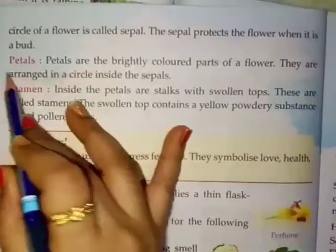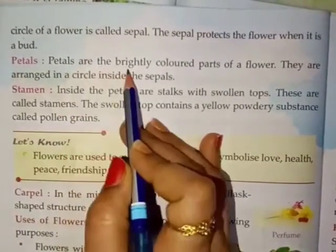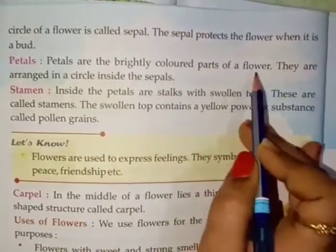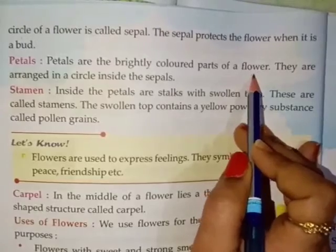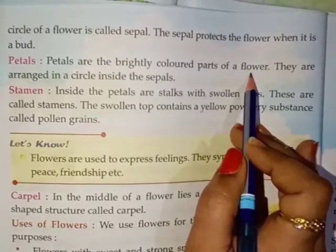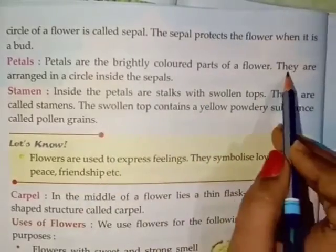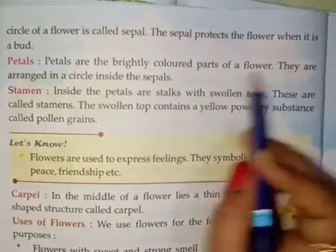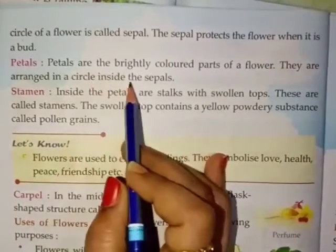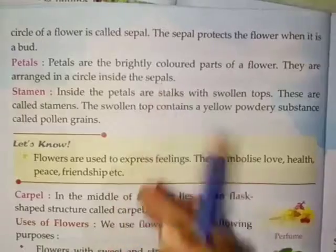Next are petals. Petals are the brightly colored parts of a flower. Inside the petals, they are arranged in a circle inside the sepal.